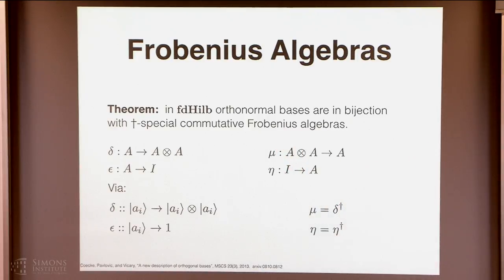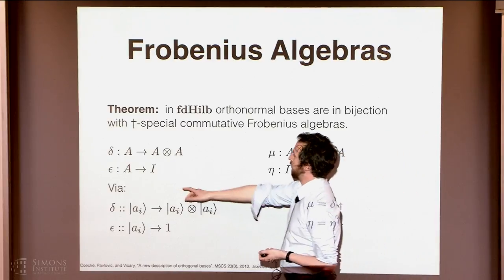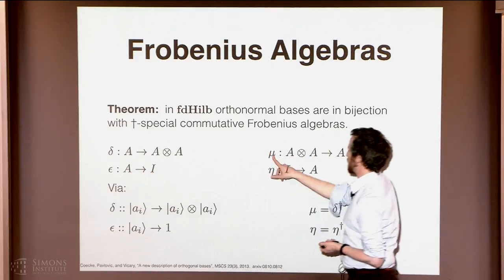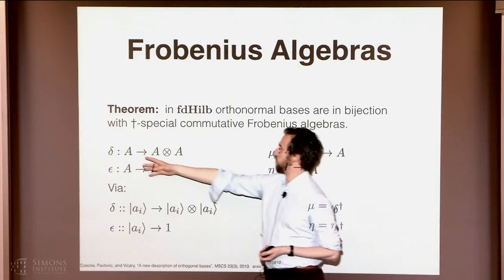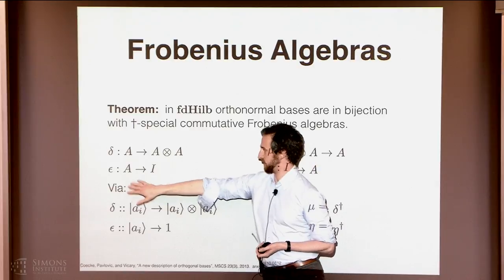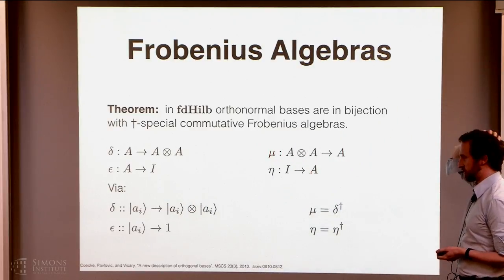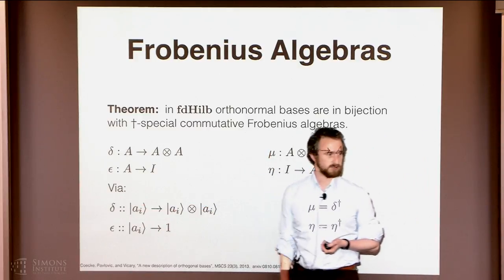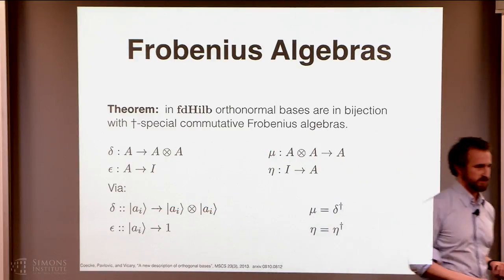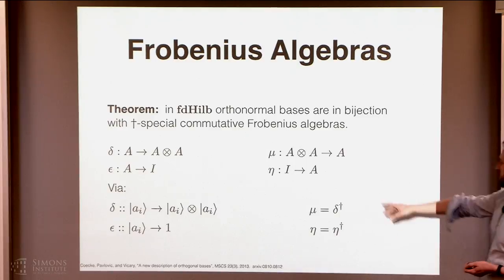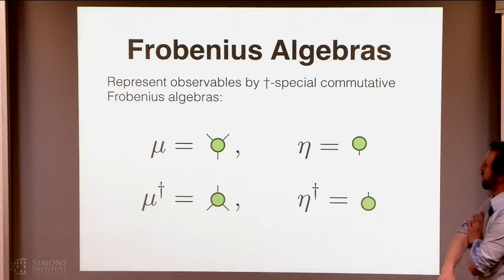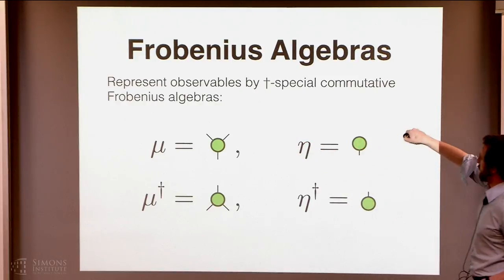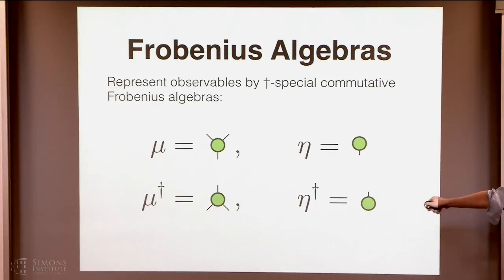From now on, I'm just going to say Frobenius algebra, and you can pretend all those other words are there. And what is one of those things? It's four operations, the multiplication, so from two copies of some base space into the one with an associated unit, and a co-multiplication from one copy of this base into two and an associated co-unit. And for finite dimensional Hilbert spaces, they are all produced in the form of taking some chosen basis of the space and mapping each basis vector onto two copies of that basis vector. So the theorem says there are no others. And we get the multiplication by just taking the linear adjoints of these maps.